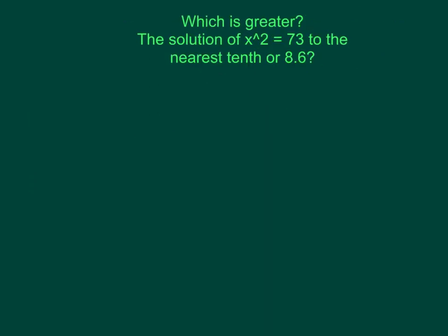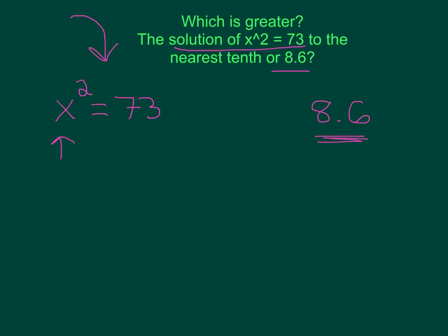The last question asks which is greater: the solution to x squared equals 73, rounded to the nearest tenth, or the number 8.6. We need to find what value of x makes x squared equal 73, and decide if that value is greater or smaller than 8.6. To figure this out, we undo the square by taking the square root of both sides. So x equals the square root of 73.